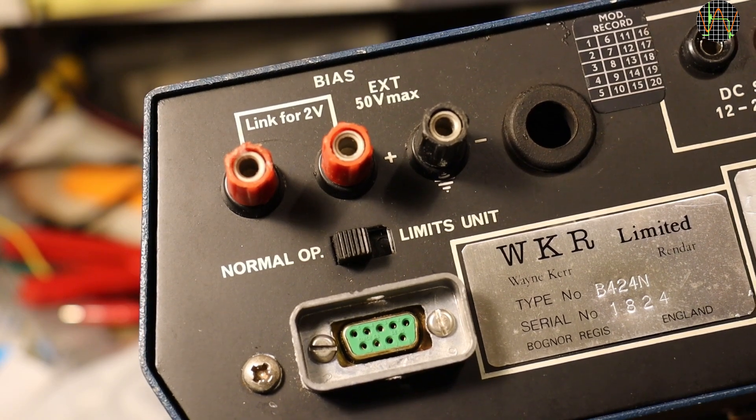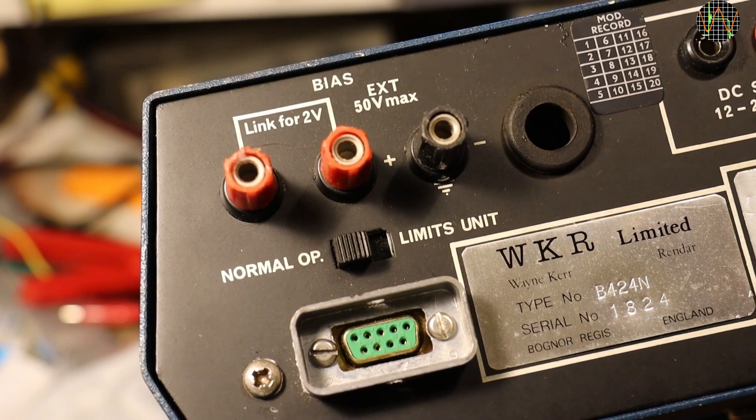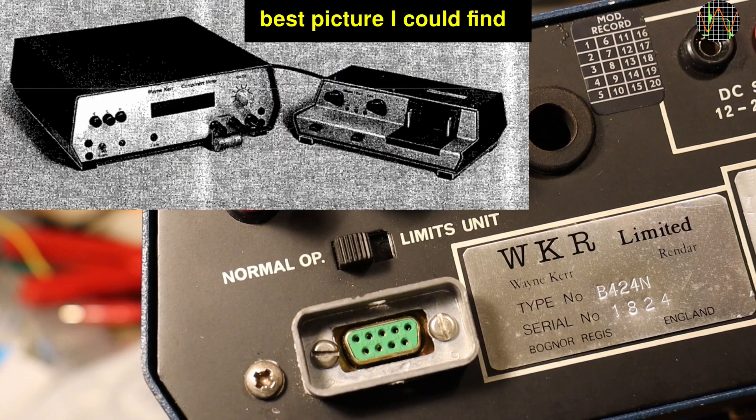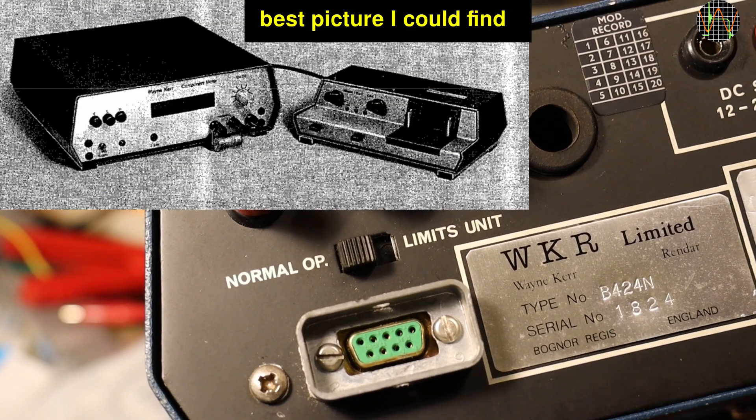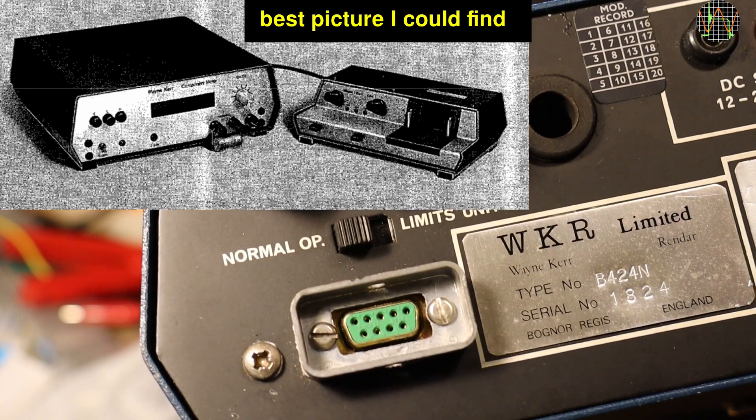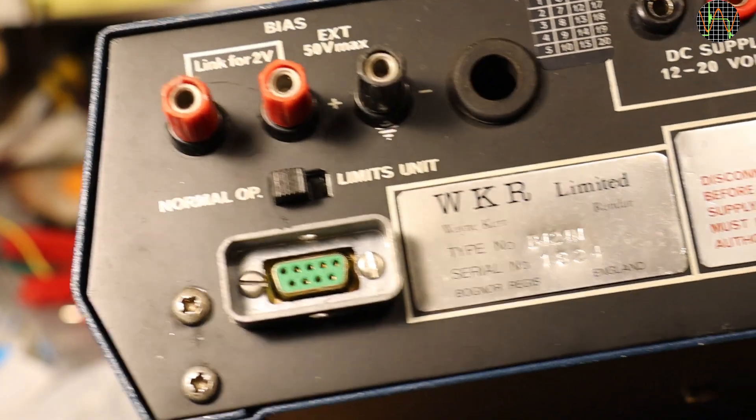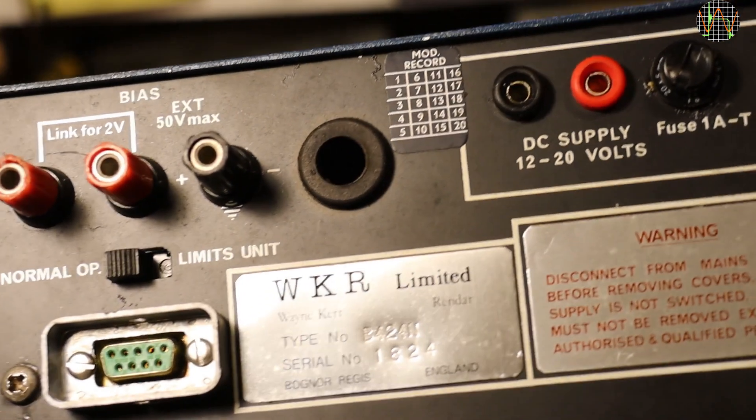There is a switch between normal operations and a limits unit. The limits unit was an optional add-on device which allowed setting of an upper and lower limit and would alert if a tested component was within or without. I don't have a limits unit, but if I had it would connect to the 9-pin socket.